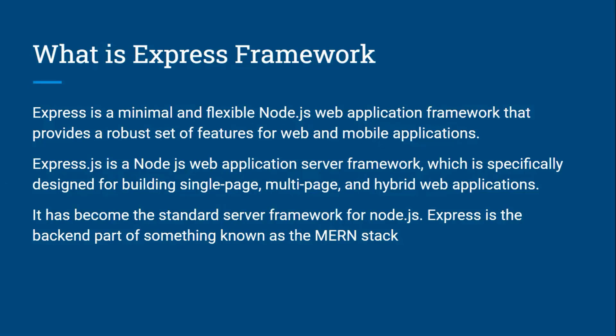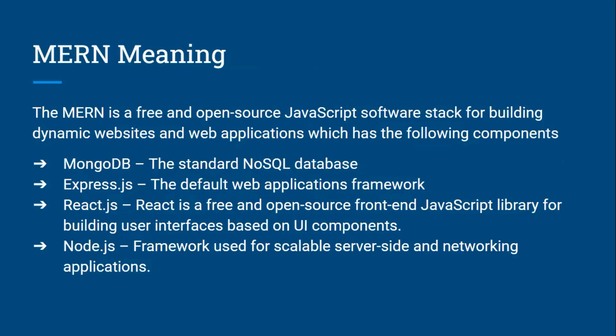Express is the backend part of something known as the MEAN stack or MERN stack. The MEAN stack is a free and open source JavaScript software stack for building dynamic websites and web applications. Its components include MongoDB, Express.js as the default applications framework, React.js — a free and open source front-end JavaScript library for building user interfaces — and Node.js for scalable server-side and networking applications.